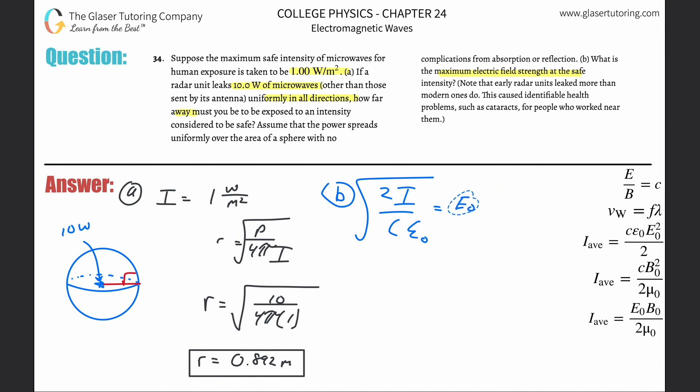So that's all it is, ladies and gentlemen. Now all we need to do is simply plug it in. So two multiplied by that intensity, the safe intensity is one that was given to us before, divided by the speed of light, 3×10⁸, multiplied by the permittivity of free space which is about 8.85×10⁻¹². This is all under the square root.